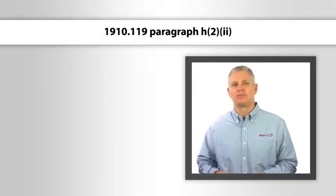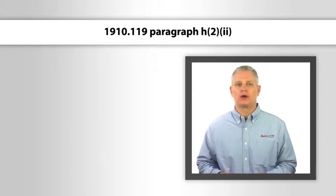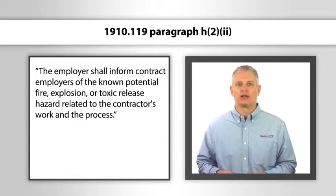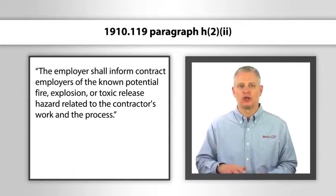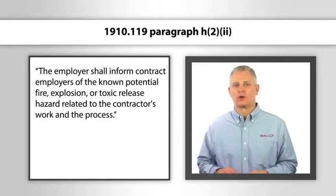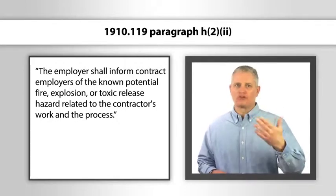Now under 1910.119 paragraph h2i, the employer shall inform contract employers of the known potential fire, explosion, or toxic release hazards related to the contractor's work and the process. So there needs to be some reciprocity here. We want to make sure that we select qualified competent contractors. We also need to notify and inform contractors of potential hazards on that work site and what the contractor can do to protect himself or herself.